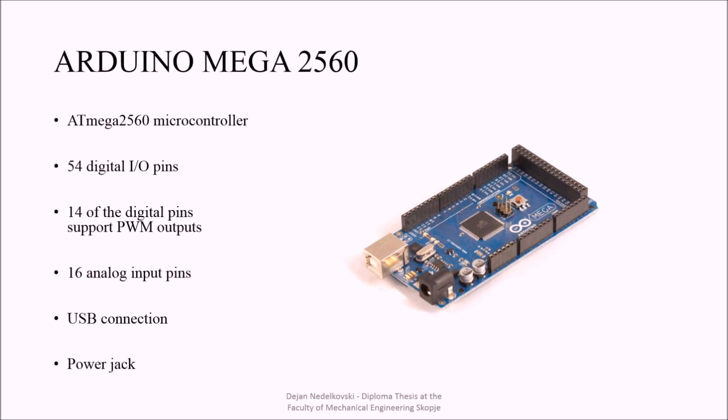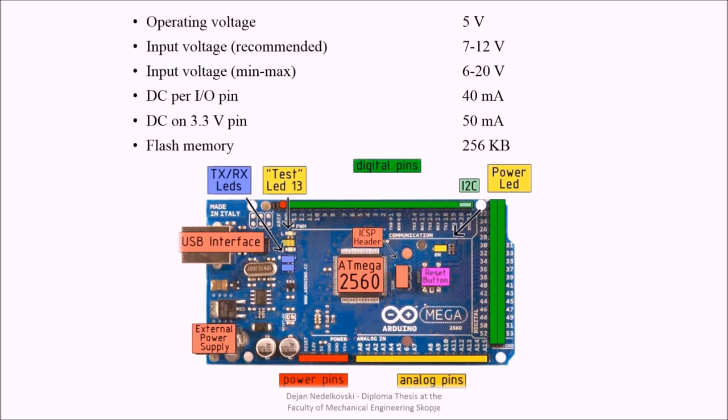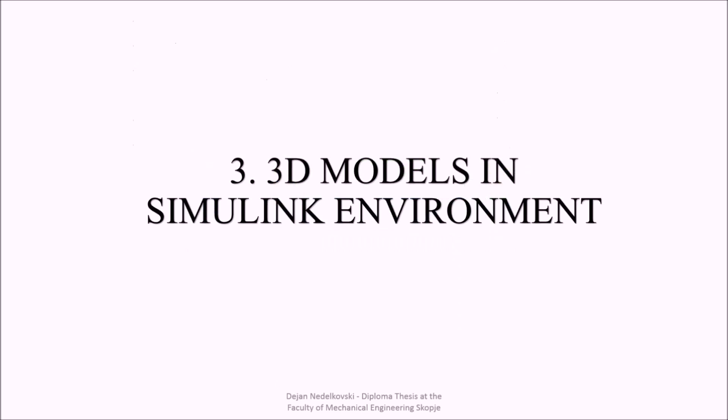The Arduino Mega card is an open source hardware which has 54 digital input output pins, of which 14 of them support PWM outputs, 16 analog input pins, USB connection, and a power jack. Its operating voltage is 5 volts and the input voltage is from 7 to 12 volts. The current that flows in the input output pins is 40 milliamps.